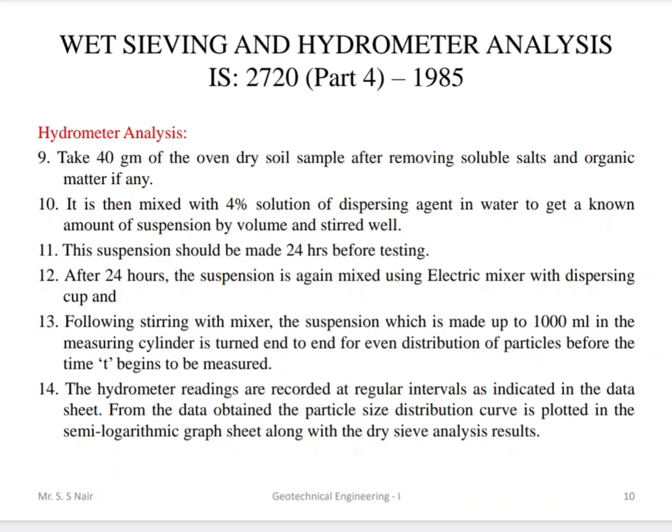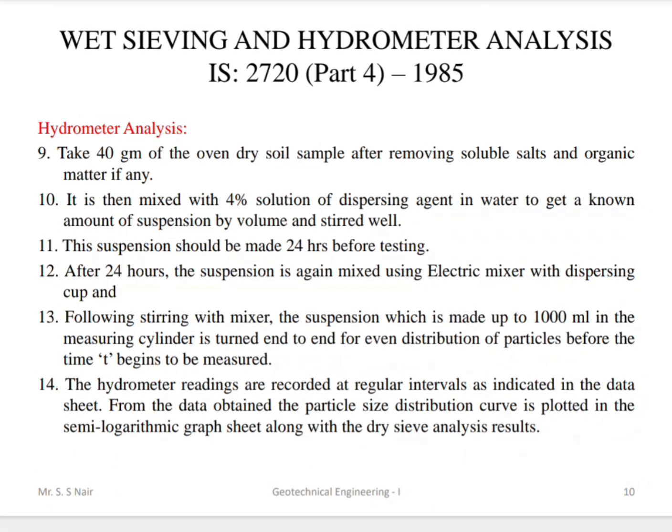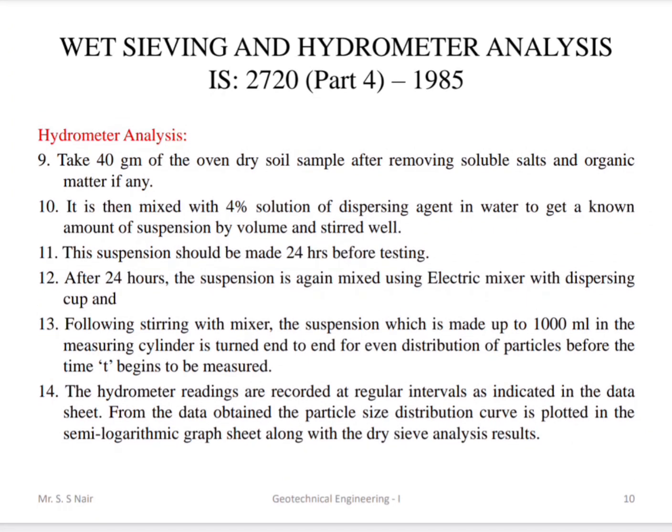The suspension is mixed using an electric mixer. After stirring, the suspension of approximately 1000 ml in the mixing cylinder is turned end-to-end for even distribution of particles before the time measurement begins. Hydrometer readings are then recorded at regular time intervals as indicated in the observation table.